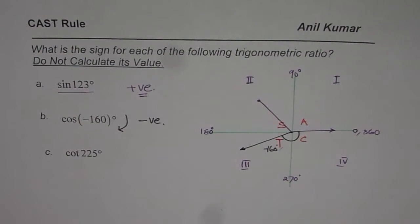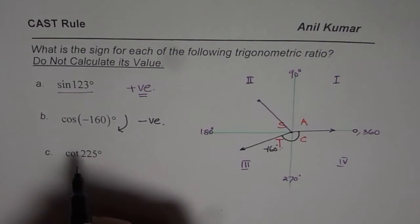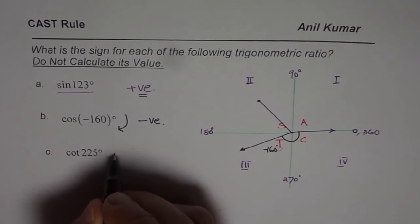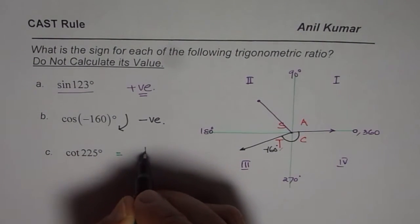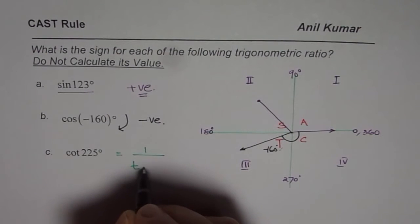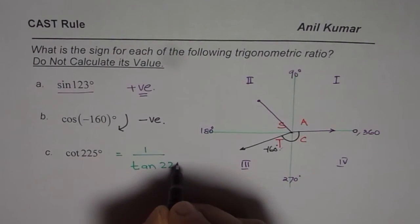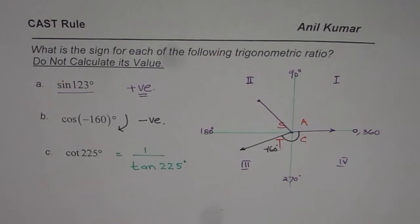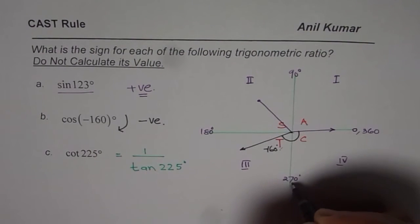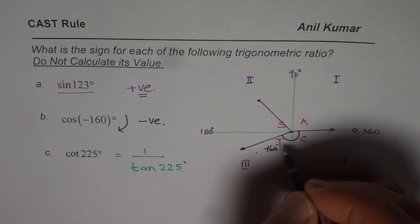Now let us look into the last one for us, which is cotangent. Now some of us may not know what cotangent is. So therefore, let me write this as 1 over tan. So cotangent is reciprocal of tan. So we are talking about 1 over tan of 225°. Now 225 is more than 180, less than 270. So therefore, we should be landing somewhere here. So let us say we are in quadrant 3.